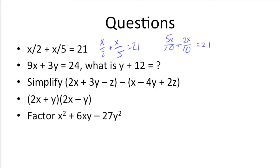So, 5x plus 2x gives us 7x/10 equals 21. We want to move this 10 over here by multiplying both sides by 10. And we get 7x is equal to 210, and x equals 30.